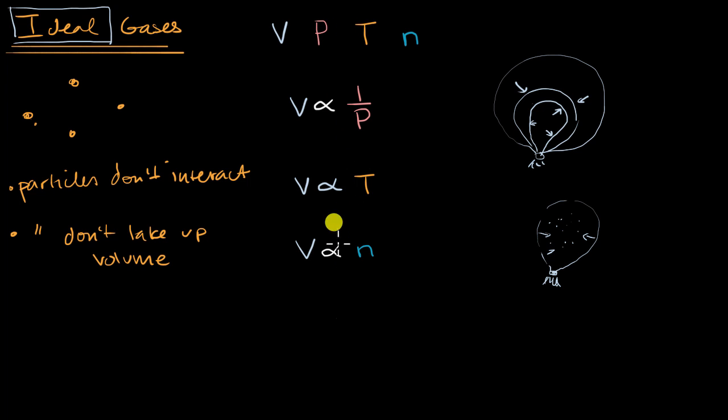So we can use these three relationships, and these are actually known as, this first one is known as Boyle's Law, this is Charles' Law, this is Avogadro's Law. But you can combine them to realize that volume is going to be proportional to the number of moles times the temperature divided by the pressure.